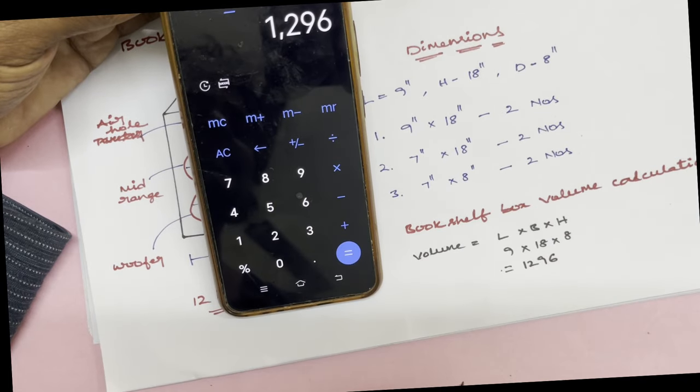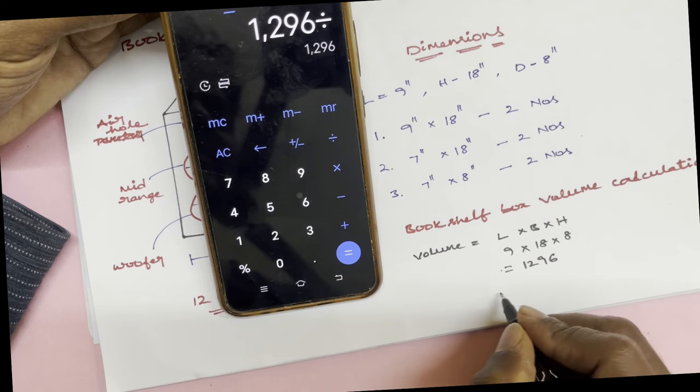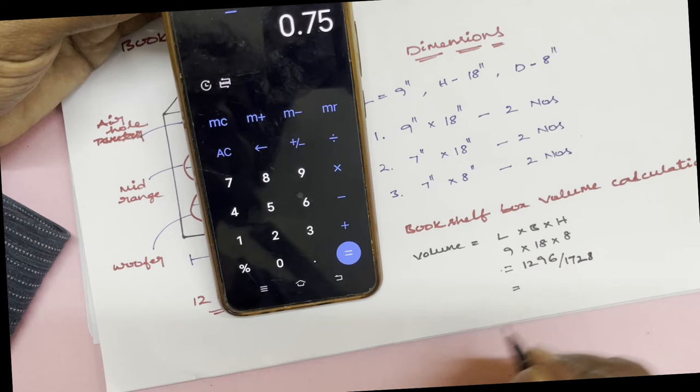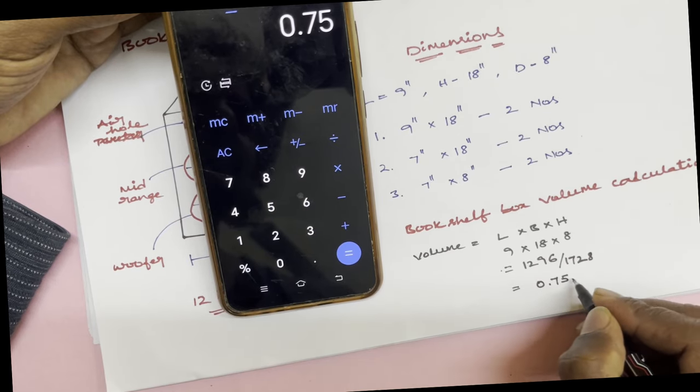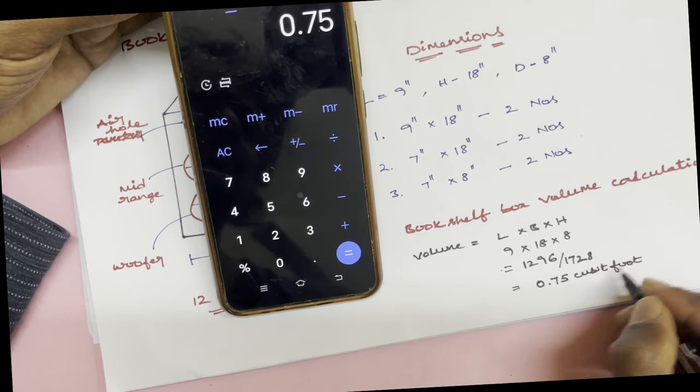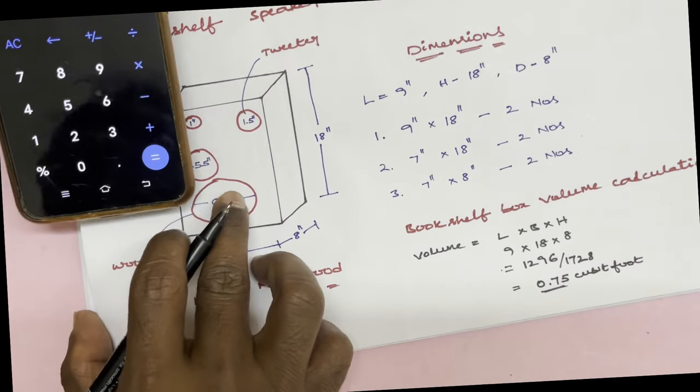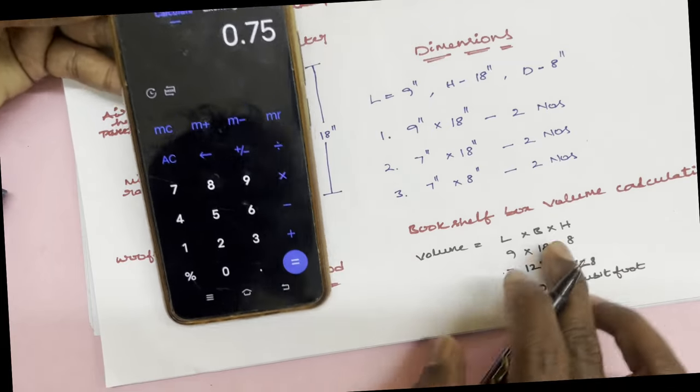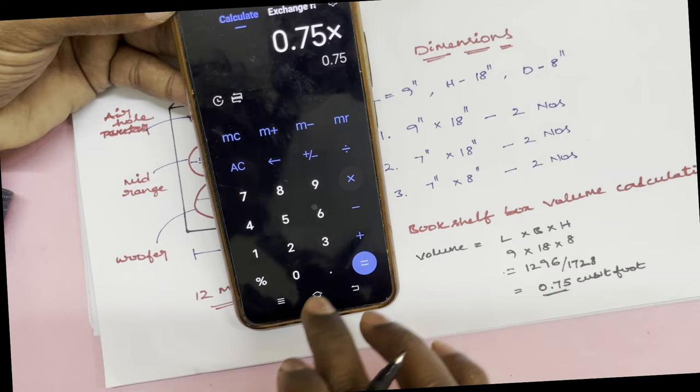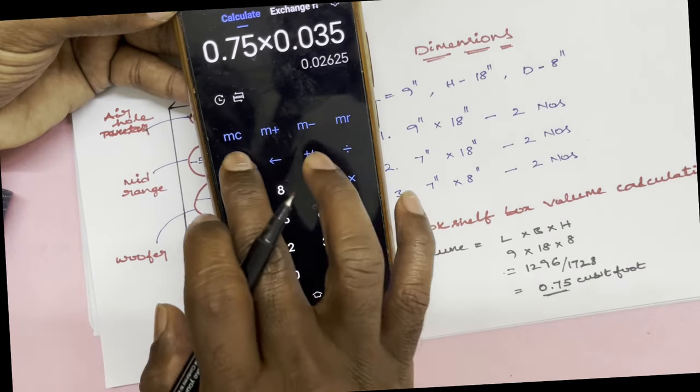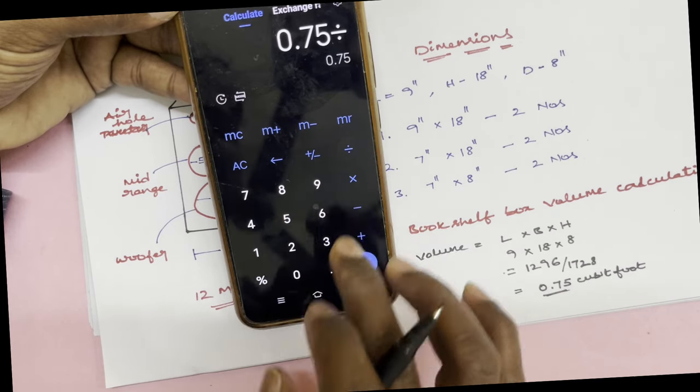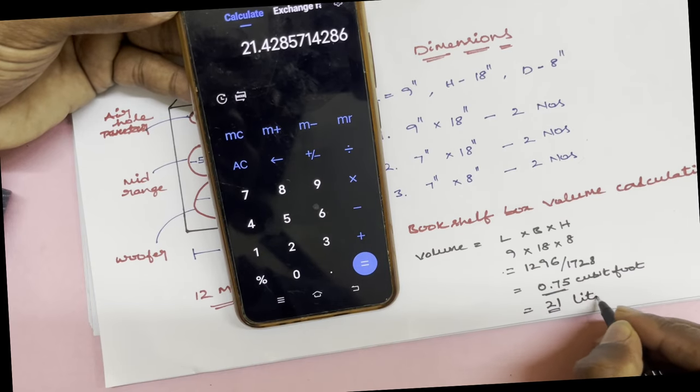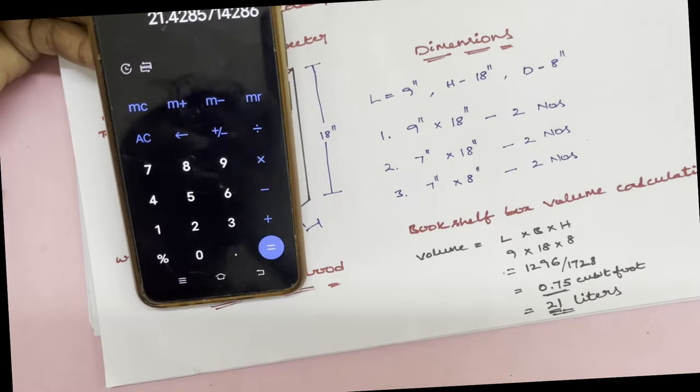1296 divided by 1728 gives 0.75 cubic feet. This box has a value of 0.75 cubic feet. To convert to liters, 0.75 divided by 0.035 gives 21 liters. This box is 21 liters.